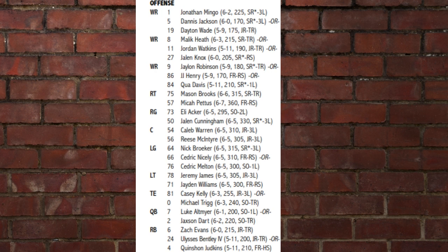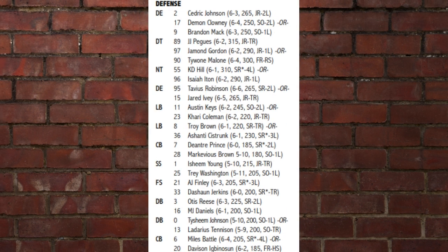There are one or two changes from what they released this morning. I don't know if this morning's version is more accurate than tonight's — that's the benefit of a media day depth chart. On the defensive side: Cedric Johnson and DeMond Clowney or Brandon Mack. J.J. Bacchese is now at the three technique; this morning he was backing up at nose guard. He was a starter over Jermon Gordon or Tyjuan Malone. Katie Hill is over Isaiah Iton — it's an or situation.